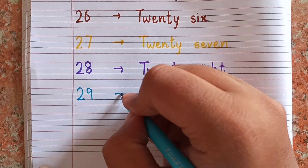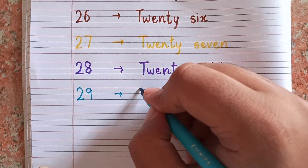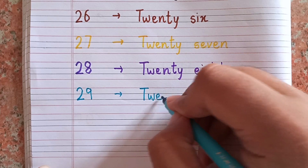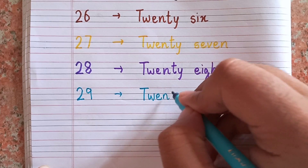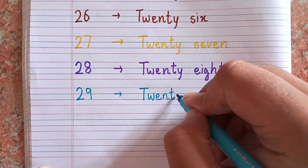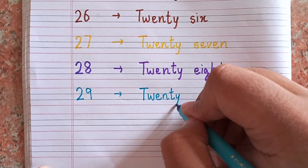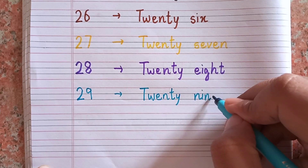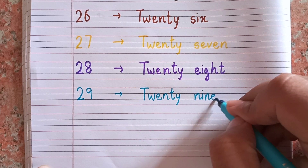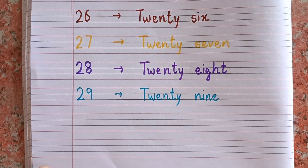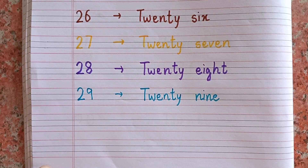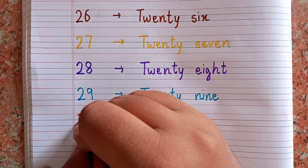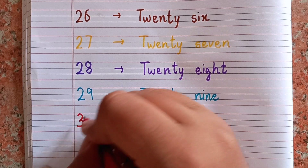The spelling of twenty-nine is T-W-E-N-T-Y N-I-N-E. 29 — 2-9. After twenty-nine, the next number is thirty.